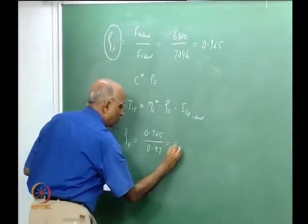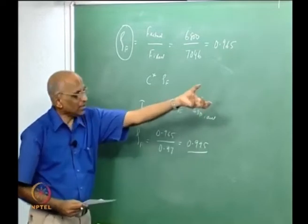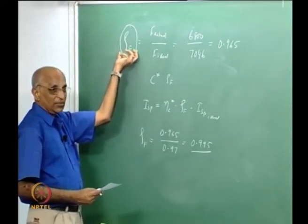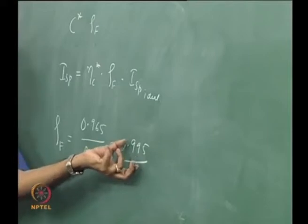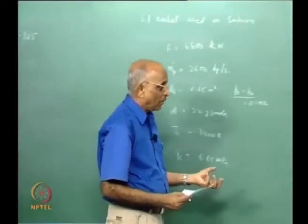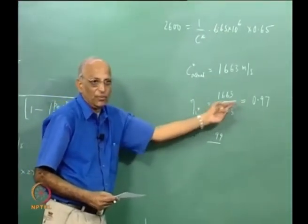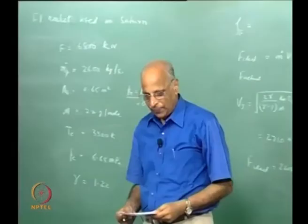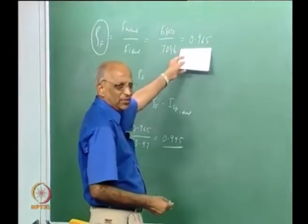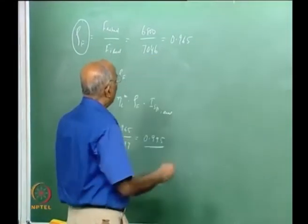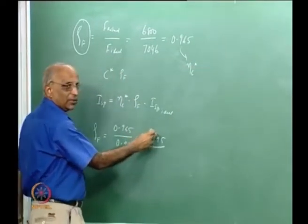Therefore ζ_F = 0.965 / 0.97 = 0.995. The contribution from the nozzle alone is 0.995, whereas the contribution from the combustion or C* efficiency is 0.97. This is how we separate the two efficiencies. I would accept 0.965 as a reasonable answer, but it is important to understand that it includes both the combustion and nozzle contributions.